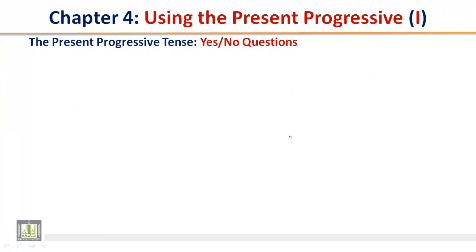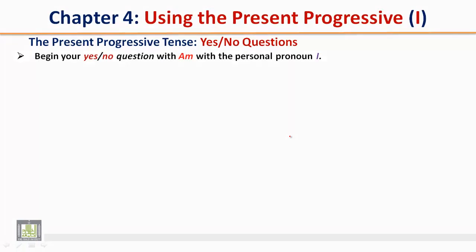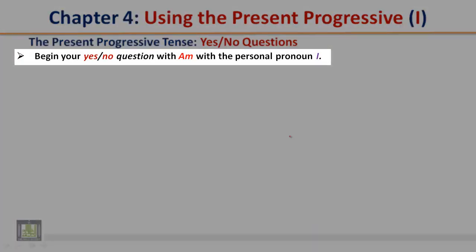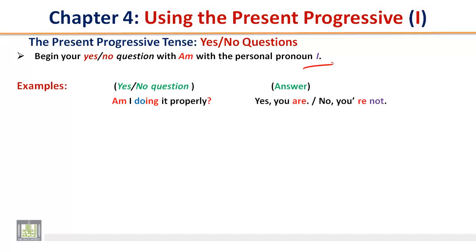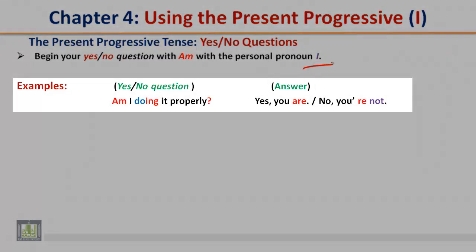The present progressive tense: yes or no questions. Begin your yes or no question with am, with the personal pronoun I. Example — Yes or no question: Am I doing it properly? Answer: Yes, you are. Or: No, you're not. That's the contraction.